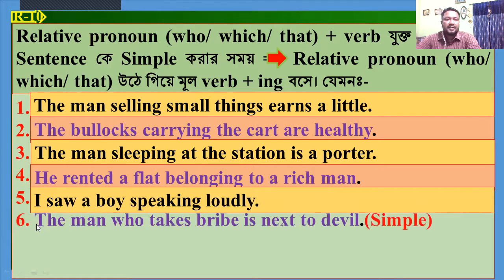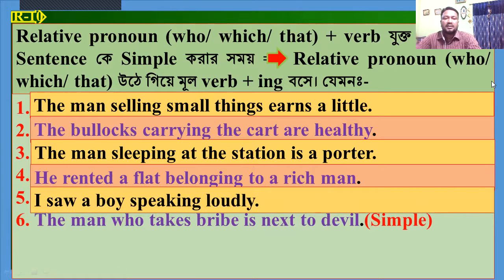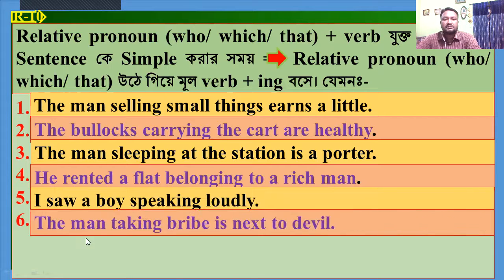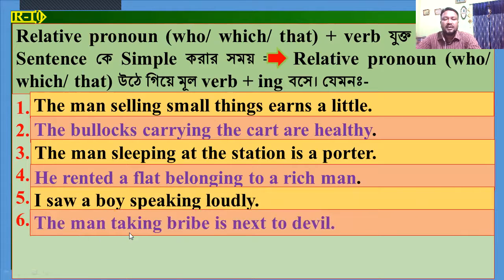Number 6: 'The man who takes bribe is next to David.' Make it simple. Dear students, here 'who' is the relative pronoun and 'takes' is the principal part. So, the answer will be: 'The man taking bribe is next to David.'